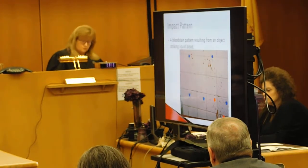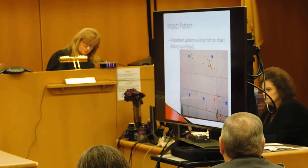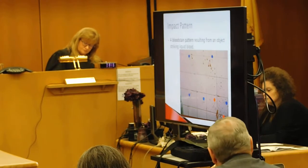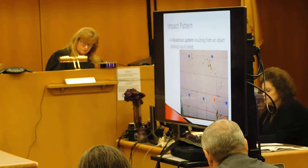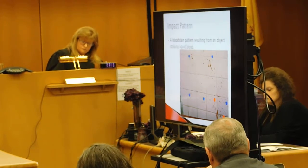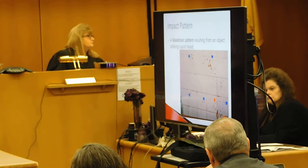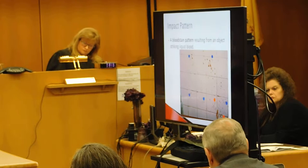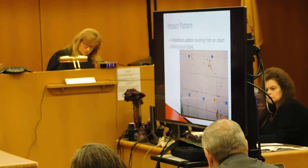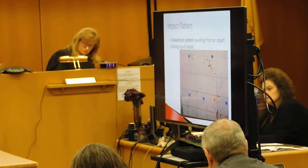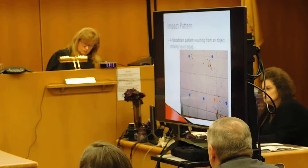Slide ten to slide eleven. An impact pattern is a blood stain pattern resulting from an object striking liquid blood. When this occurs, you get a spatter pattern. Oftentimes at the area of origin the stains will be very circular, very round. If it's blunt force trauma from a beating, the stains are probably one to three millimeters in diameter. If it is extreme force or a gunshot, those stains will be one millimeter and less in diameter — like a mist pattern.